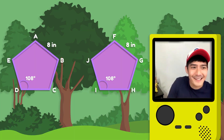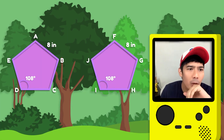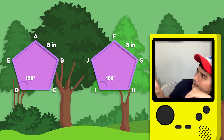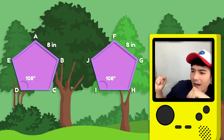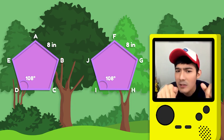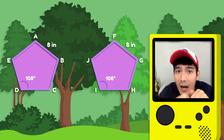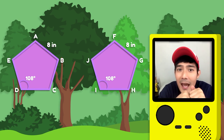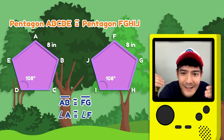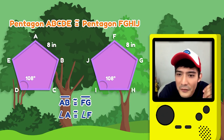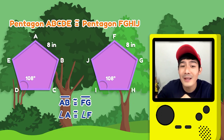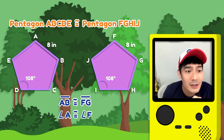Eto, compare natin — uy, may nag-appear na naman na polygon. Itong dalawang pentagon kaya, congruent polygons kaya ang pares na ito? Ejack nga natin. Napapansin ko — parehong 8 inches ang sukat ng kanilang sides, pareho rin nasa 108 degrees ang kanilang angles. Ibig sabihin, pentagon ABCDE is congruent to pentagon FGHIJ. At dahil nga congruent, magkapareho ang sukat nila — we can say that line AB is congruent to line FG, or angle A is congruent to angle F.